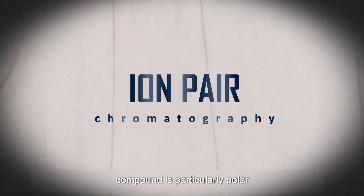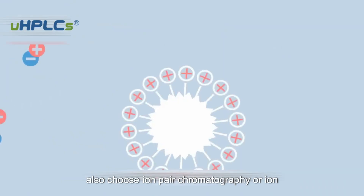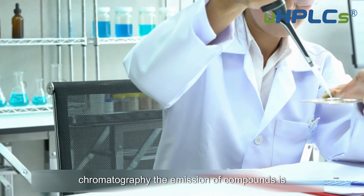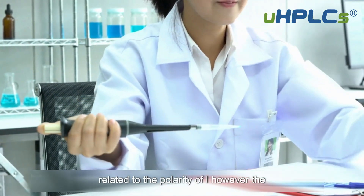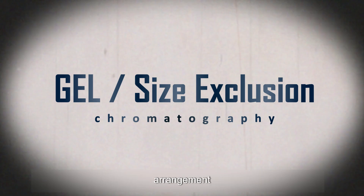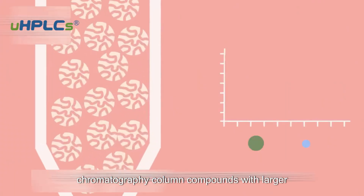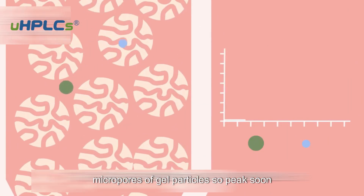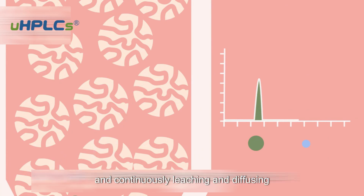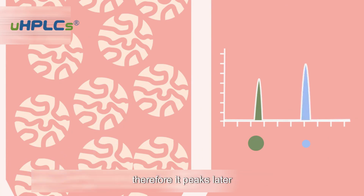If the compound is particularly polar and prone to ionization, you can also choose ion pair chromatography or ion exchange chromatography to enhance the interaction between ions and the stationary phase, and separate different compounds. Whether it is normal phase, reversed phase, or ion exchange chromatography, the elution of compounds is related to the polarity of the compounds. However, gel chromatography is only related to the size of the compound, and is therefore also called size exclusion chromatography. As the sample flows through the gel chromatography column, compounds with larger diameters are less likely to enter the micropores of gel particles and so elute sooner. Compounds with smaller diameters will enter the micropores of the gel particles and continuously diffuse in and out, and therefore elute later.